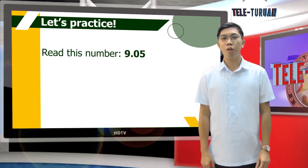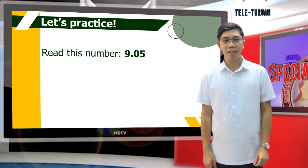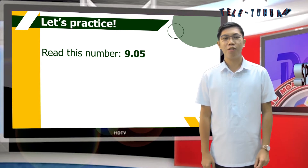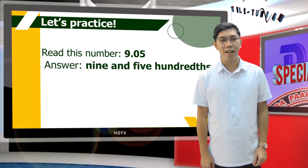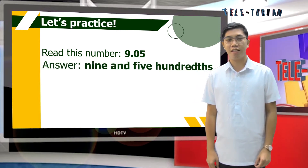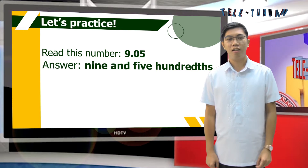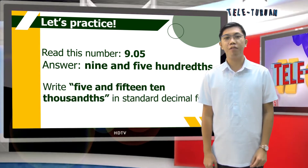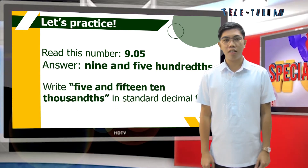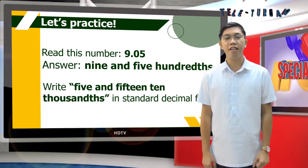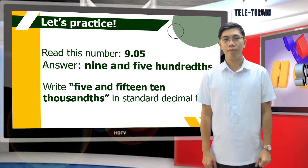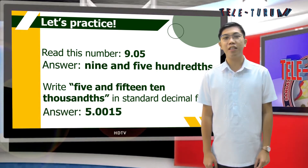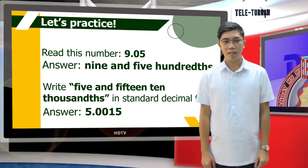Read the decimal number on the screen. The answer is nine and five hundredths. Next, write five and fifteen ten-thousandths in standard decimal form. The answer is five and fifteen ten-thousandths.